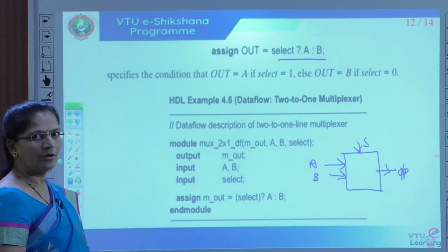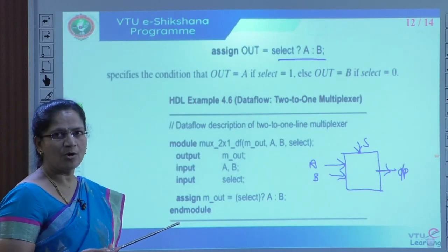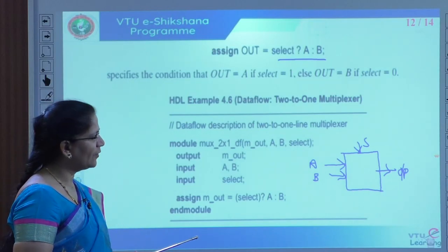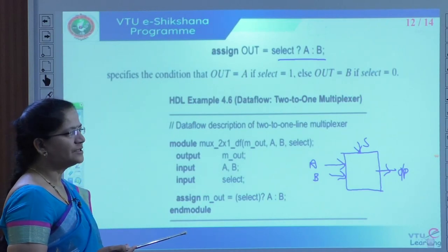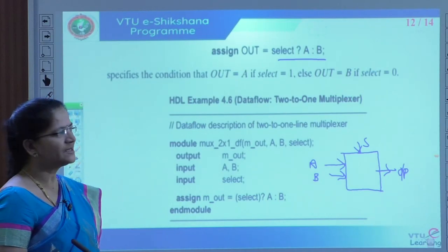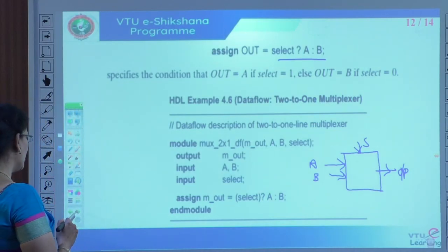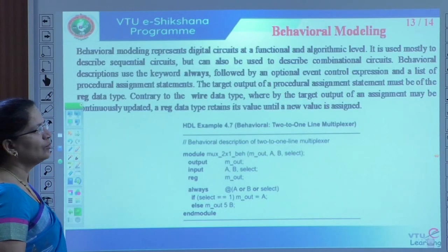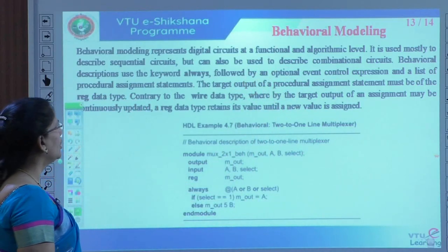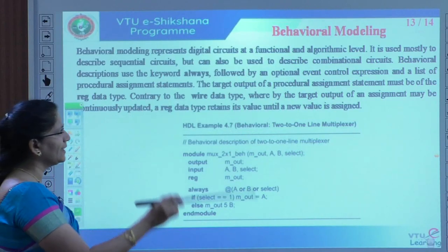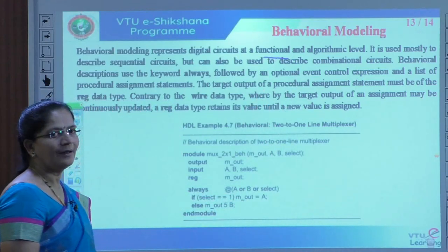Now I think all of you have followed how to write the data flow model — for example, writing for an adder as well as a multiplexer. Both the data flow model and the gate level model are clearly understood. Next, we will go with another model: the behavioral model.